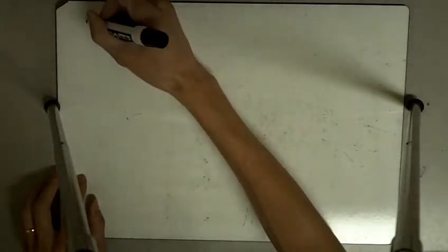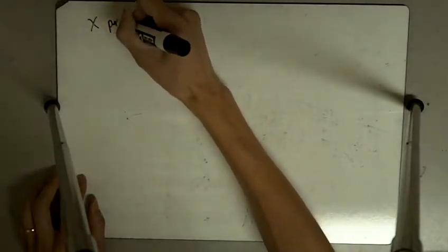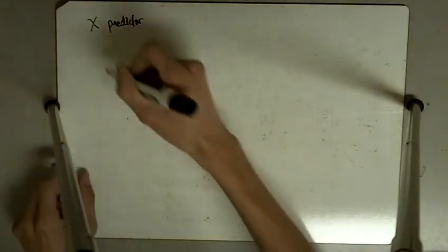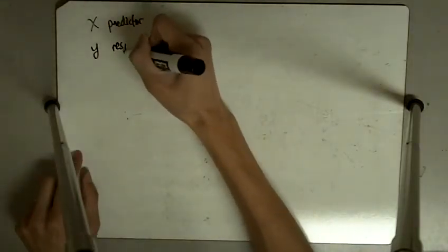Here it says choosing the predictor and the response. Pick out which variable you think should be the predictor. The x is the predictor, what we are using to predict, and y is the response, what we are predicting.